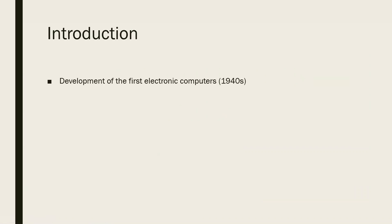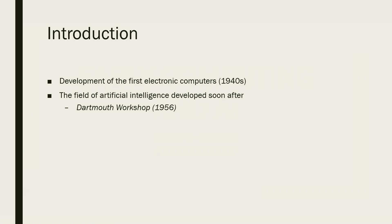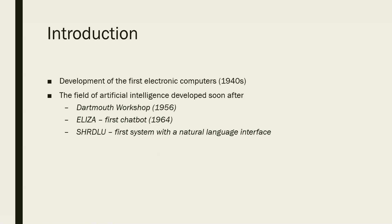The first major advancements in electronic computing came about during the 1940s, and the first researchers aimed at developing artificial intelligence also became prominent soon after. The Dartmouth workshop was very critical to this early development. We also see some early examples of intelligent systems, such as Eliza, the first example of a chatbot, developed as early as 1964, and the development of Shrdlu, the first system with a natural language interface.